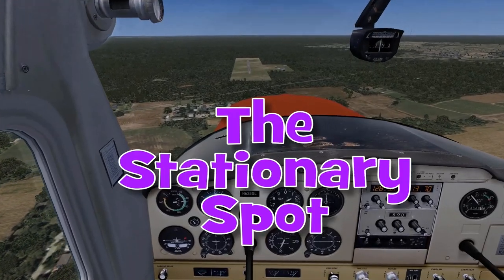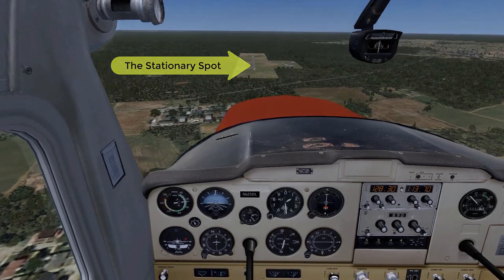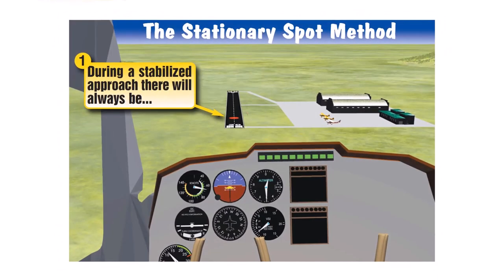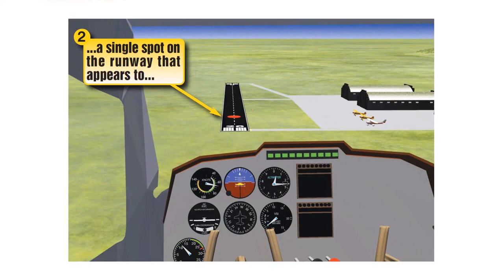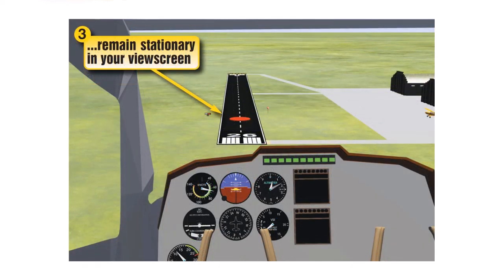Remember how a stationary spot on the ground shows where you're headed. With the airplane trimmed for approach speed and the descent rate constant, as you look through your windscreen, there will always be one single spot on the ground directly ahead of you that doesn't appear to move. It's the spot where your airplane is headed, assuming that the glide path doesn't change. All objects on the surface positioned above the stationary spot and thus beyond the point where the glide path intercepts the runway appear to move up away from that stationary spot as you get closer.